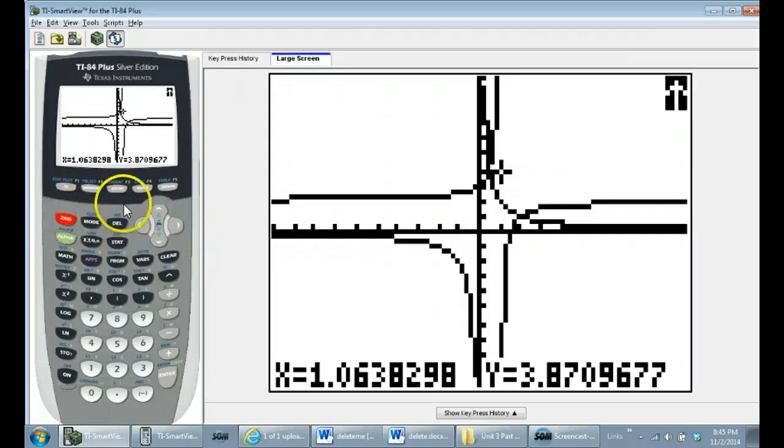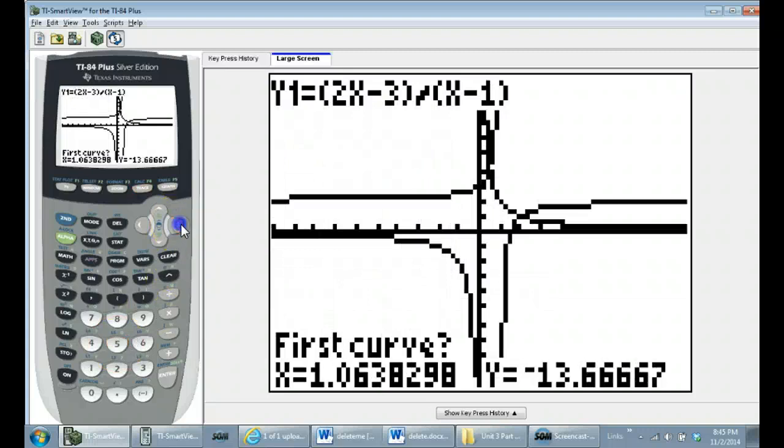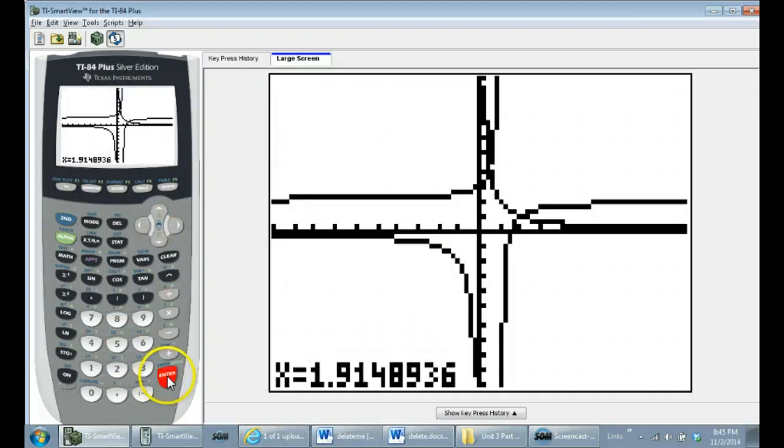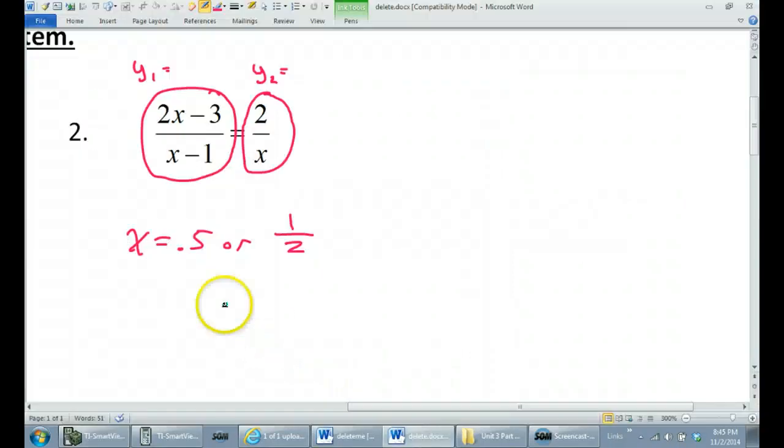How about this one over here? Let's see if I can get over there. Oh yeah, I have to do it again. Second, trace, 5, once again. Now I'm going to try to get on over there. And here we go. Enter, enter, enter. And this one is at 2. So x equals 2. So these are the two solutions. 1 half and 2. And that is how you do that.